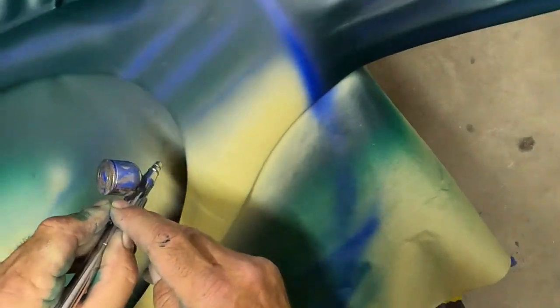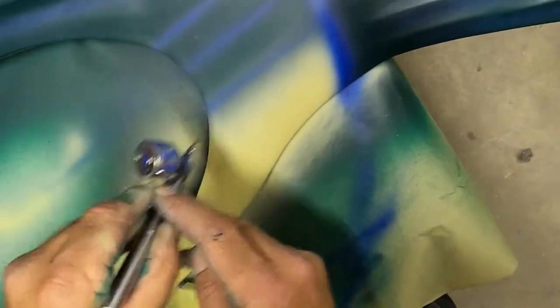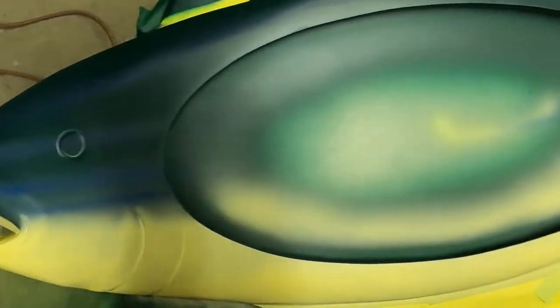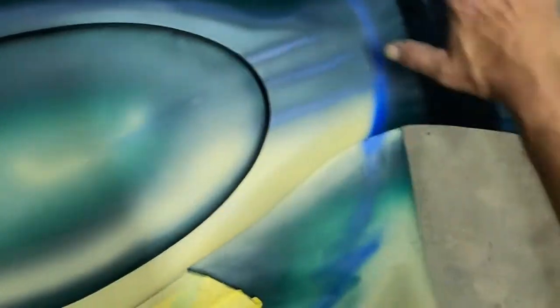Softening that up a little bit. Hopefully I'm getting this on the camera. Now you can kind of see the blue there. I got a little bit real faint back here on the rear fin.